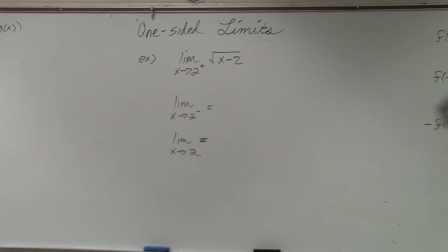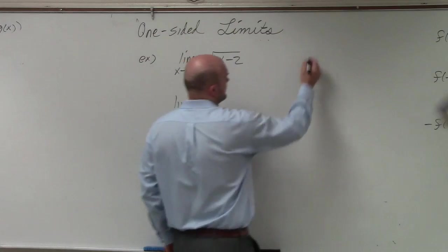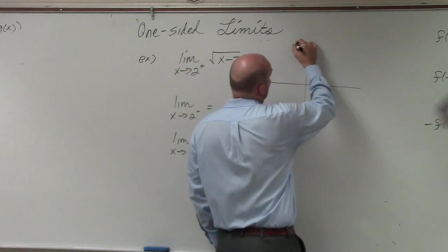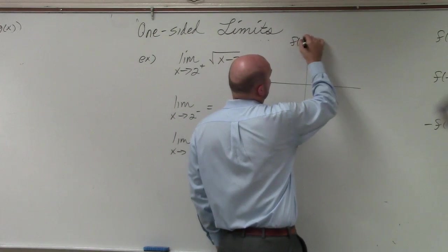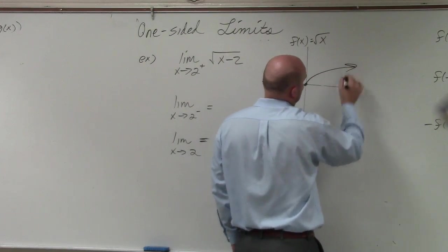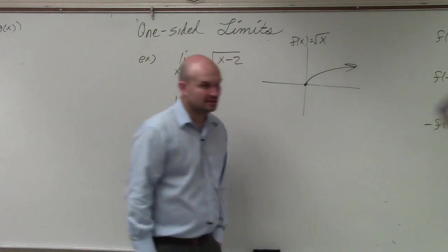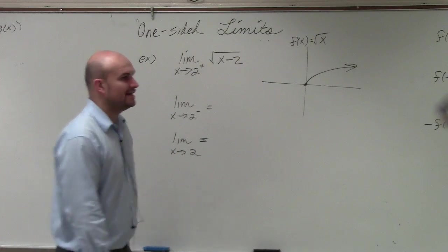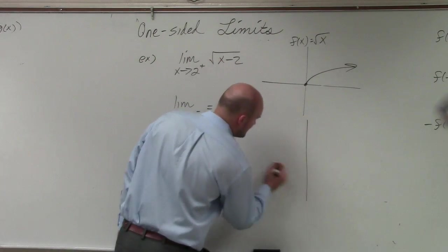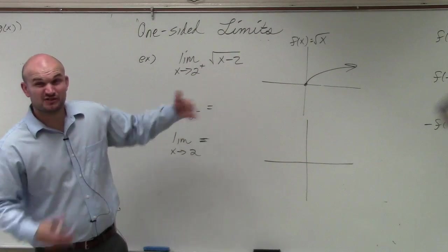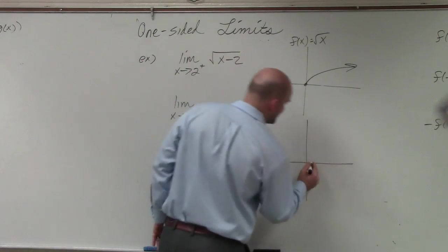If you guys take a look at this — I can plug it in up there if needed, or if you plug this in your calculator — the function square root of x looks something like that. If we simply have x minus 2, that's just going to shift the graph two units to the right.